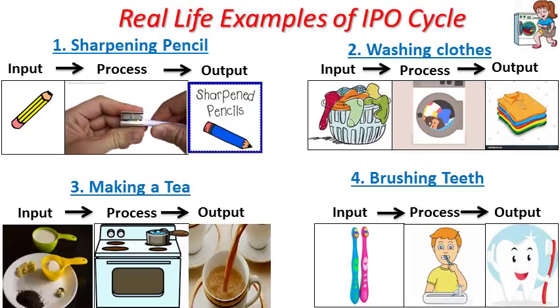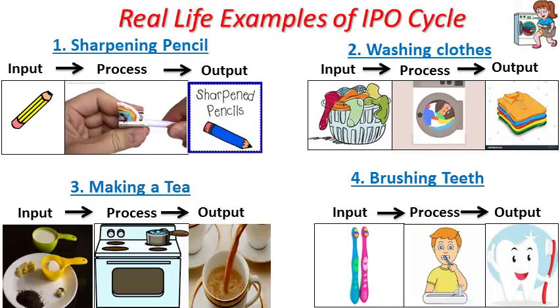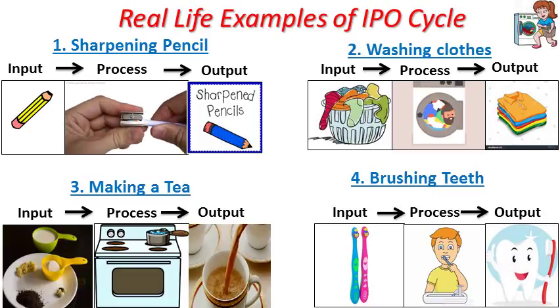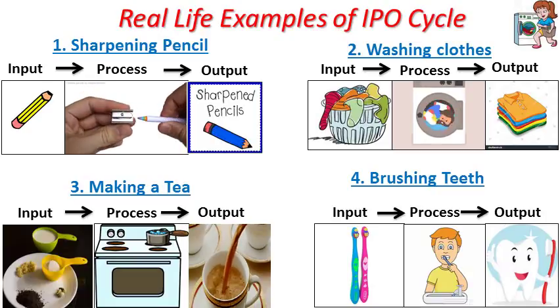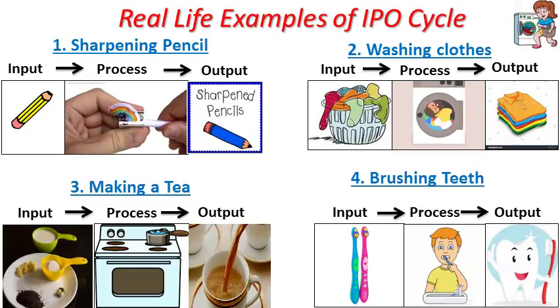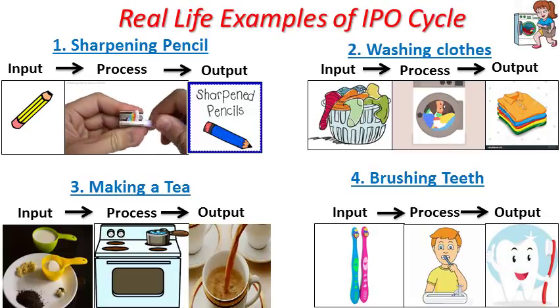Second example: washing the clothes. Input is dirty clothes, processing is washing in a washing machine, and output is clean clothes.